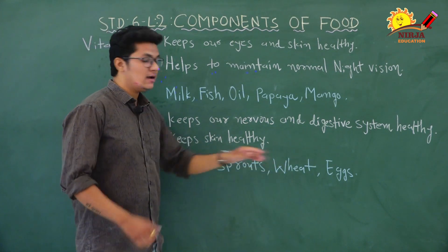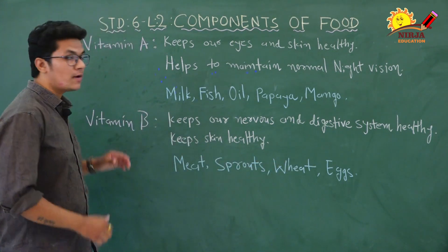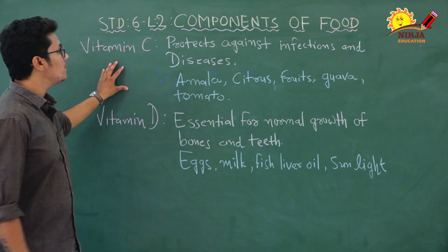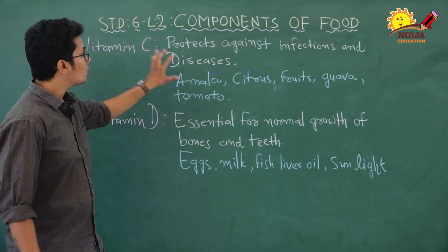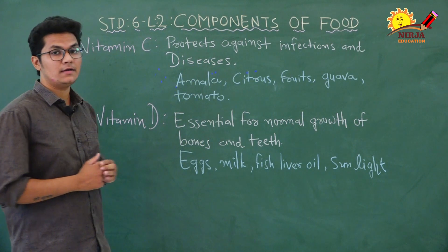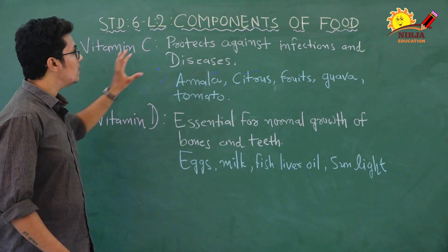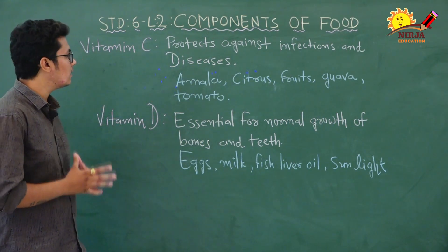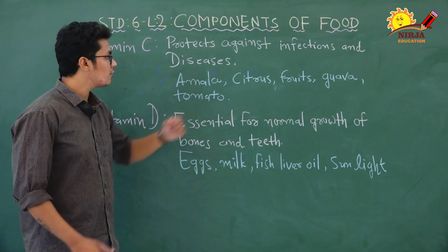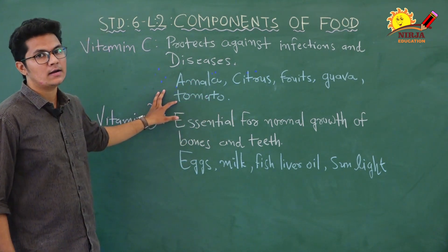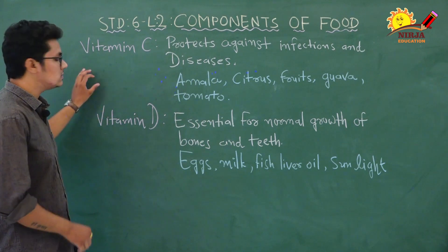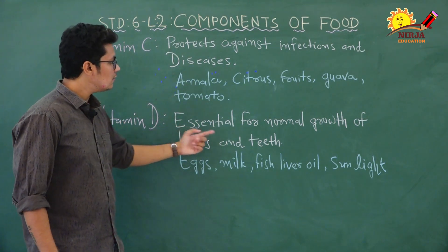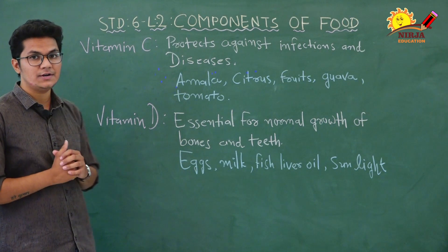Meat, sprouts, wheat, and eggs are sources of vitamin B. Now, vitamin C. Vitamin C protects against infections and disease. Vitamin C is also essential for normal growth of bones and teeth.